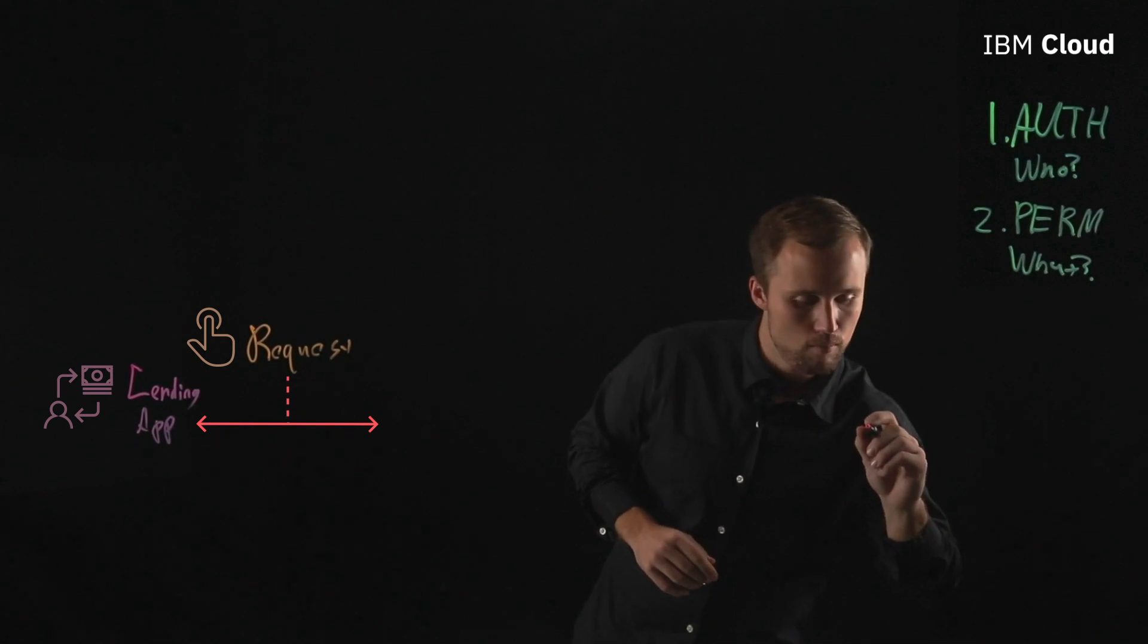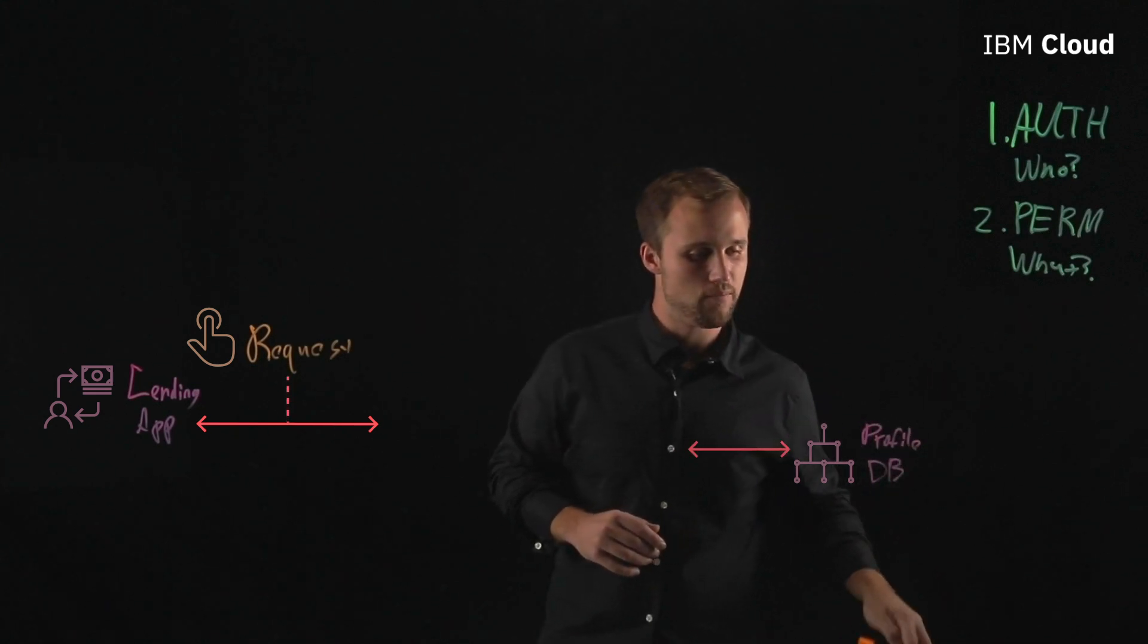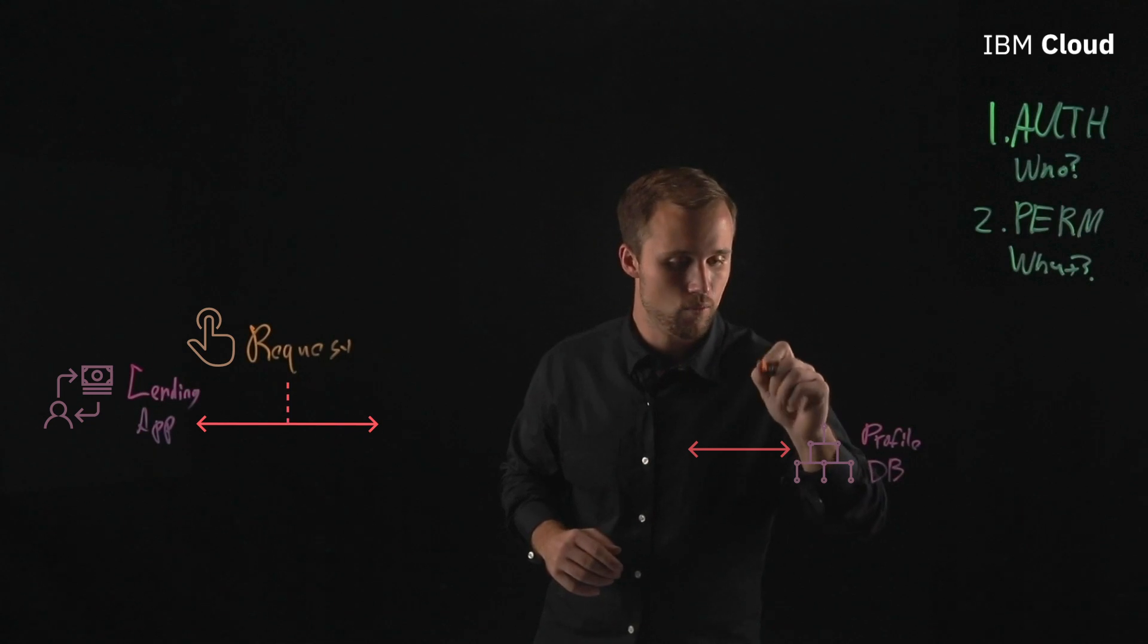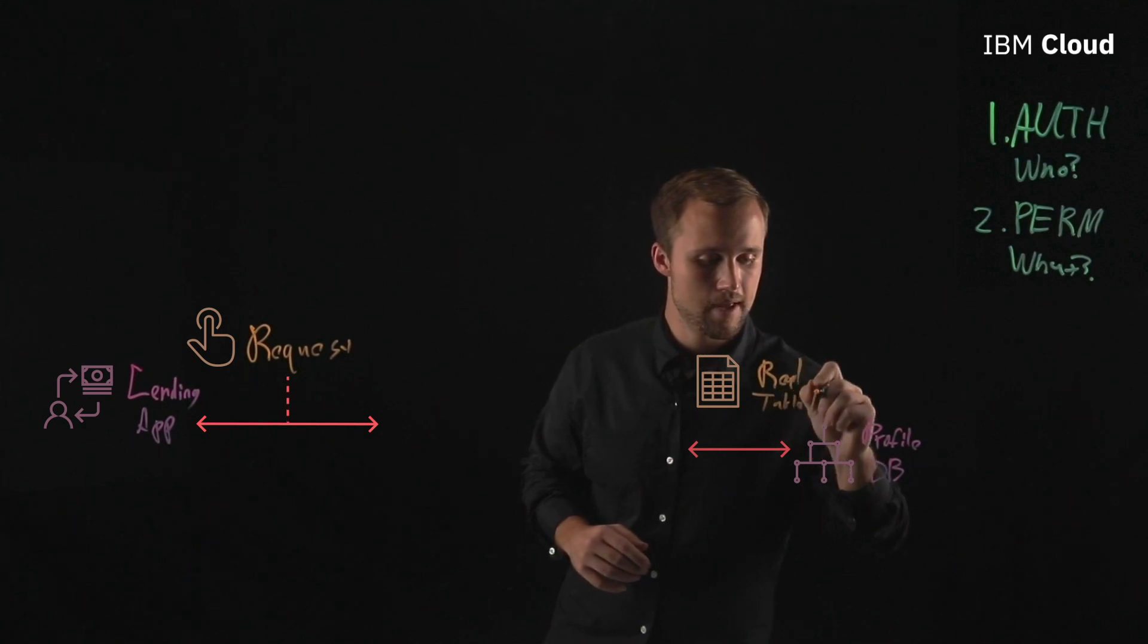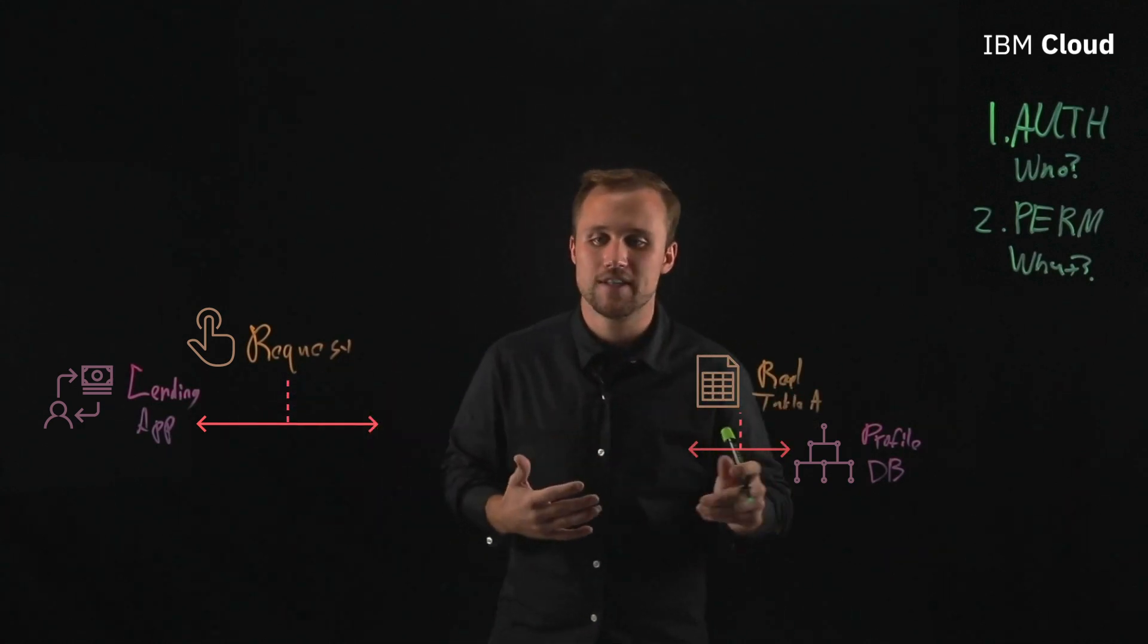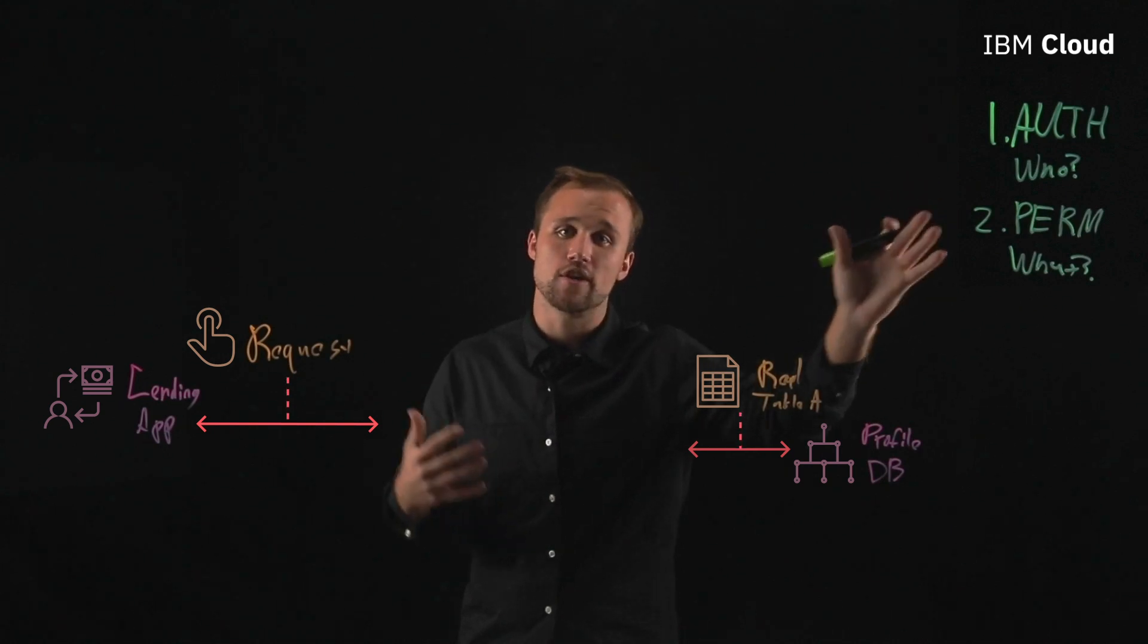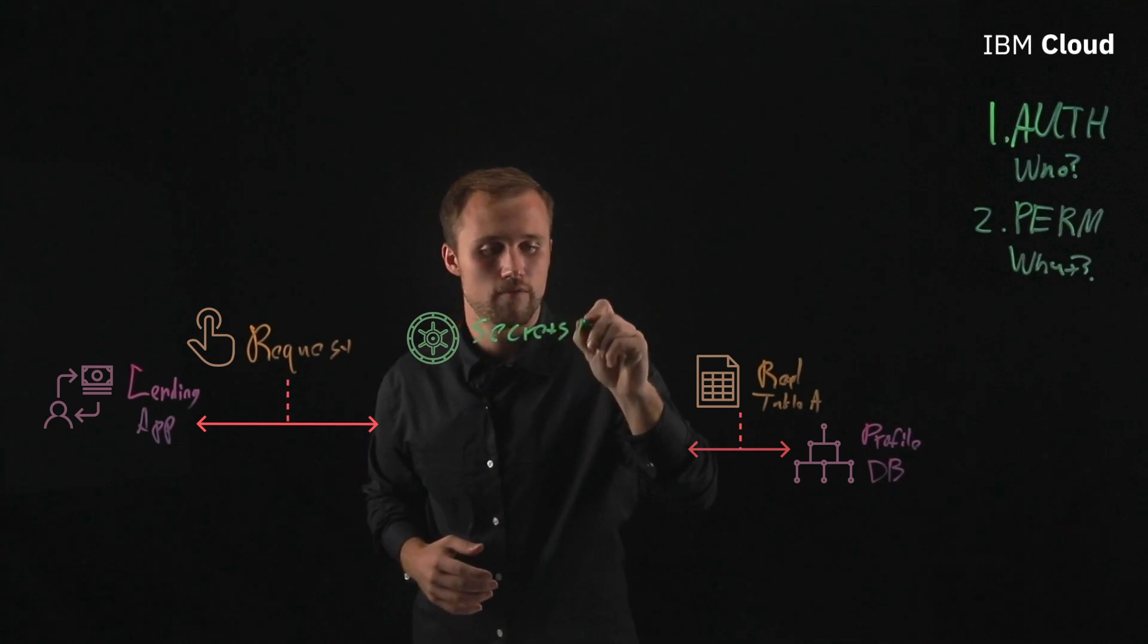So we're going to call this a profile database. So within here we have profile DB. And we know that the set of permissions that we want to grant are going to be read permissions for table A. So again, where are we going to store the secret that's ultimately going to give us access to authentication and ultimately to the set of permissions that we need here.